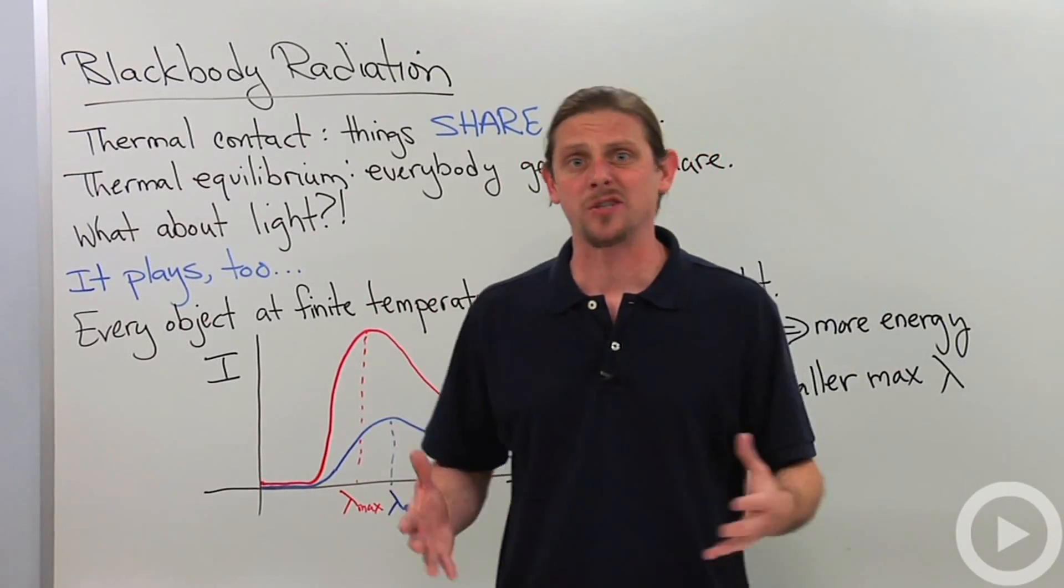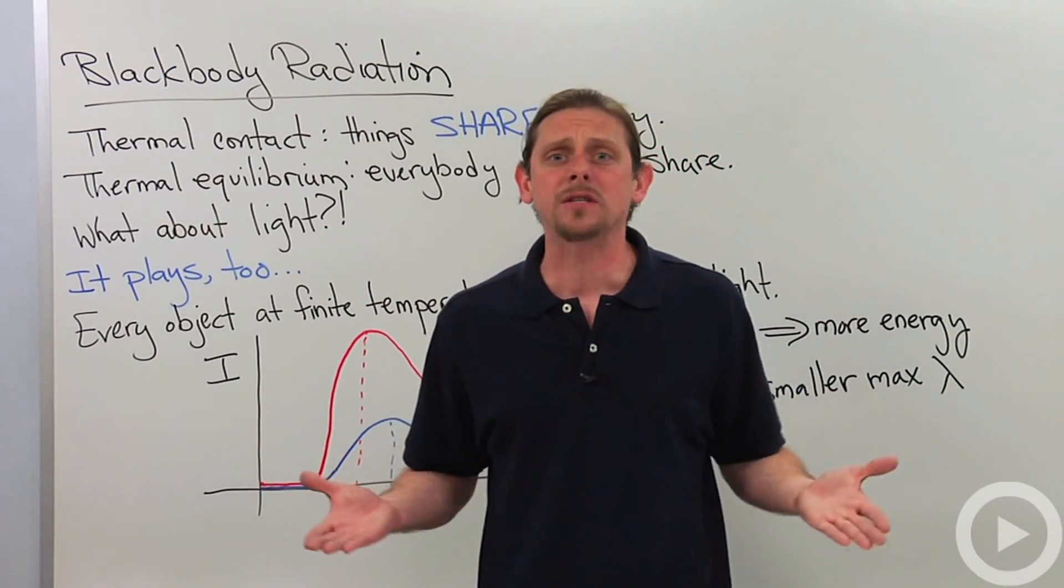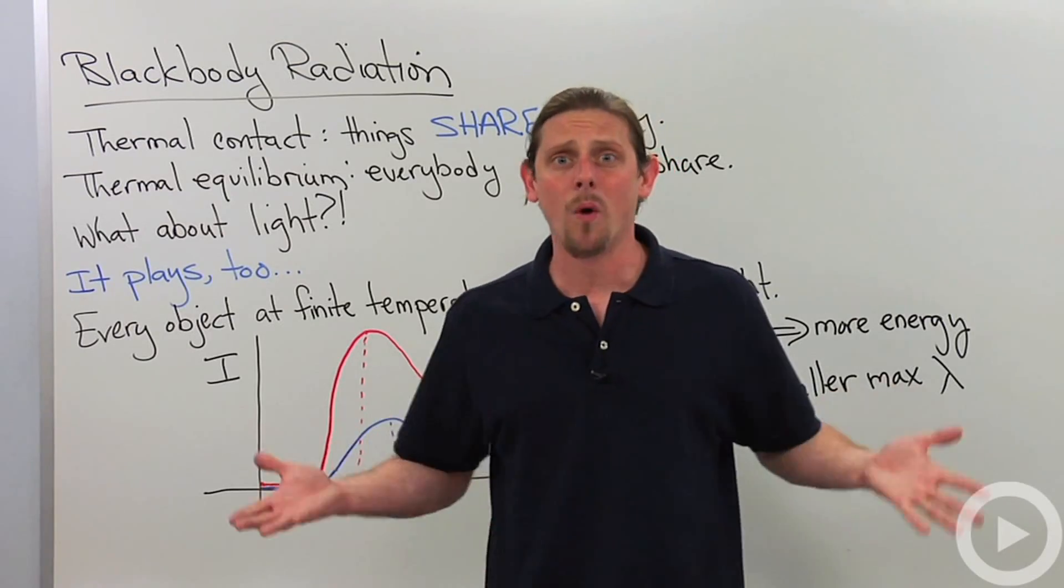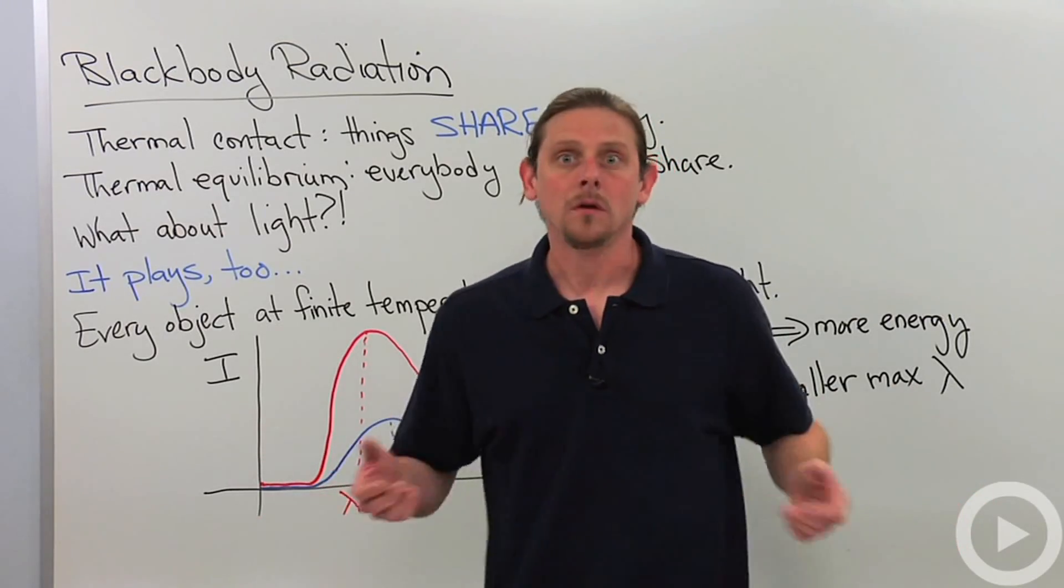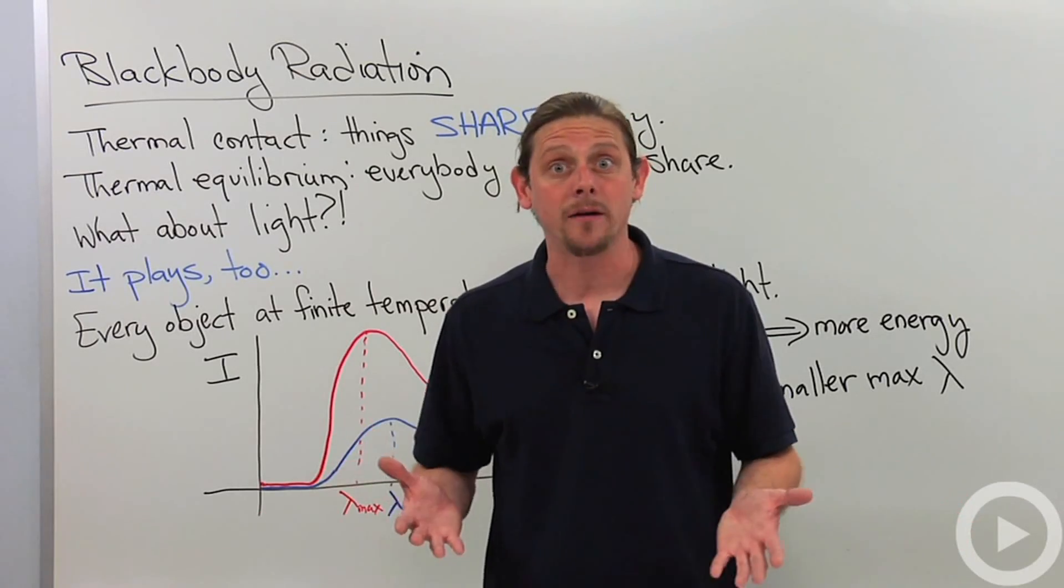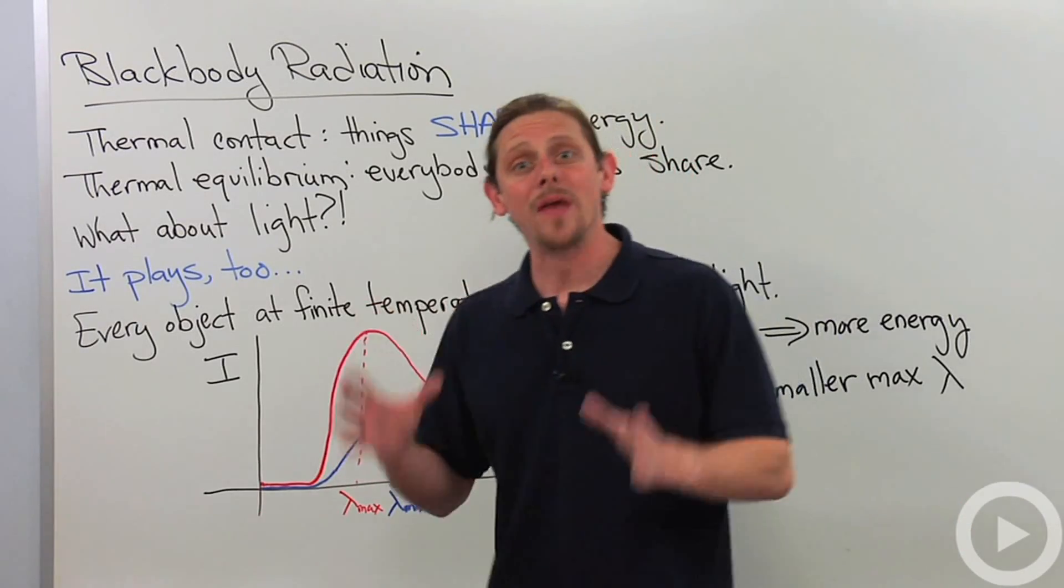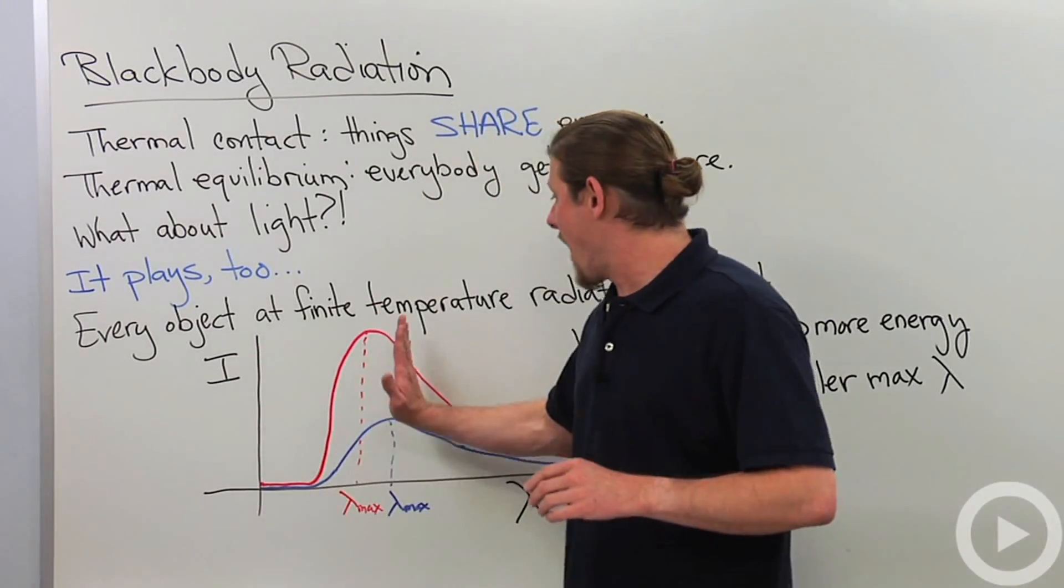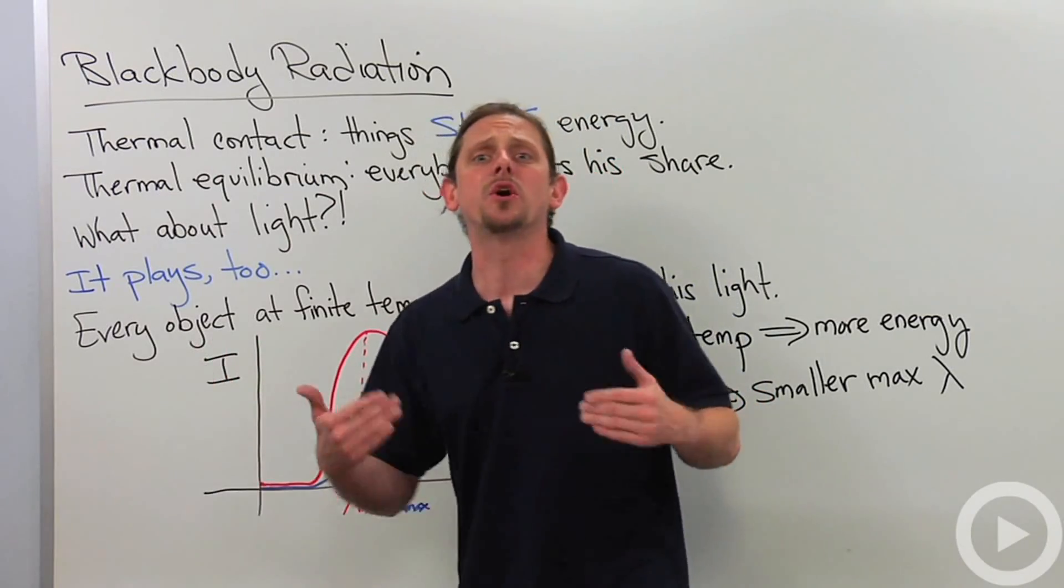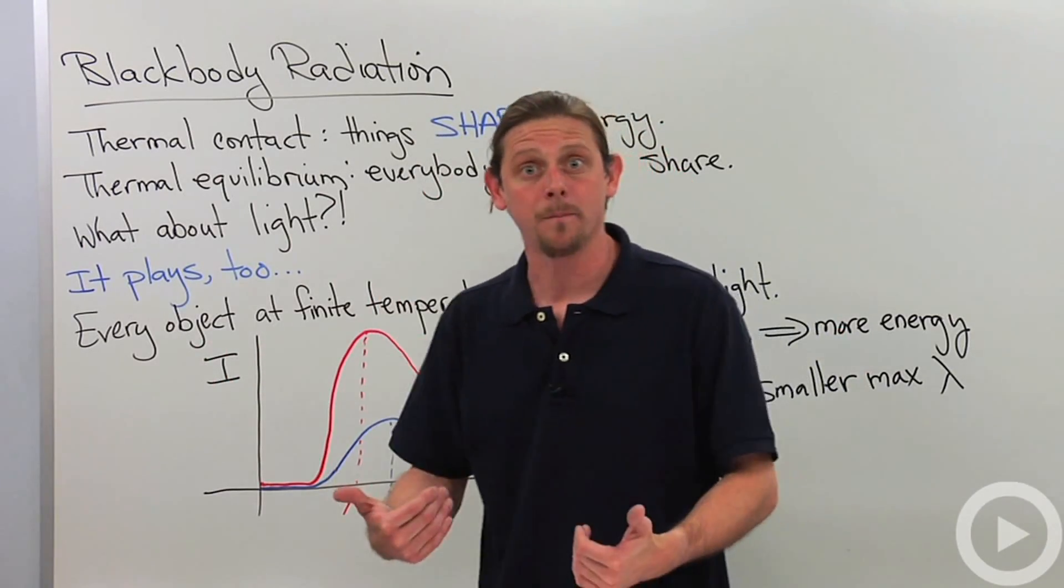Now you can also understand this just kind of qualitatively if you've ever seen an electric range. You turn it on, turn it up to high, and what happens? How do you know it's hot? Well, the filament is glowing, right? It starts glowing red. So that's an indication that it's hot. That means that the wavelength of peak emission has moved over far enough that you can actually see visible light.